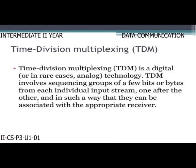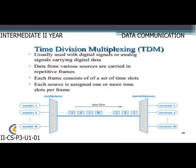Time division multiplexing (TDM) is a digital — or in rare cases analog — technology. TDM involves sequencing groups of a few bits or bytes from each individual input stream, one after the other, so that they can be associated with the appropriate receiver. Data from various sources are carried in repetitive frames; each frame consists of a set of time slots, and each source is assigned one or more time slots per frame.